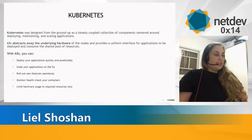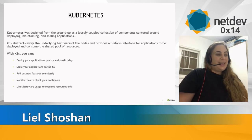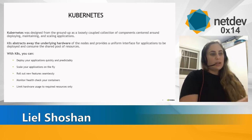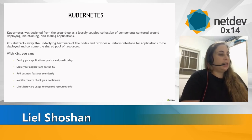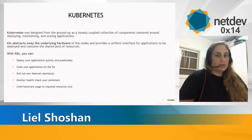Kubernetes was designed as a loosely coupled collection of components centered around deploying, maintaining, and scaling applications. It abstracts the underlying hardware of the nodes and provides a uniform interface for applications to be deployed. When using Kubernetes to deploy your application, you can deploy them quickly, scale them up and down, roll out new features, monitor and health check the containers, and limit the hardware usage to the required resources.